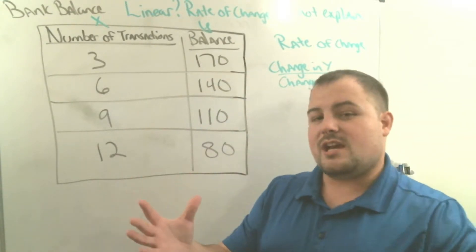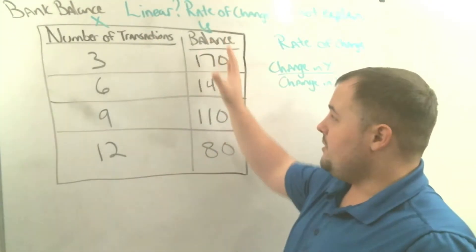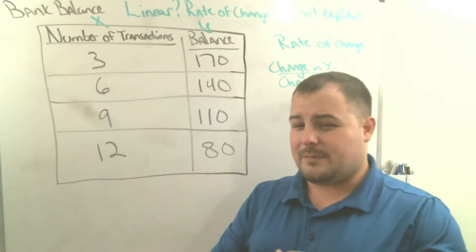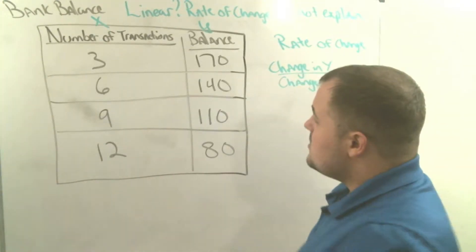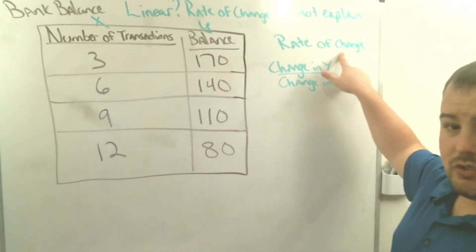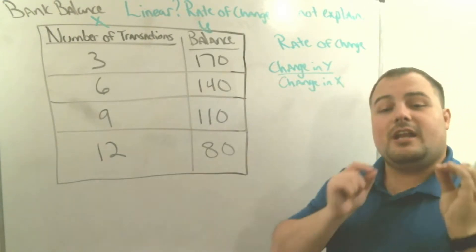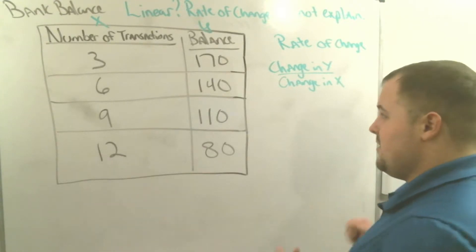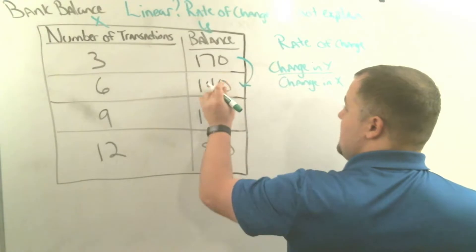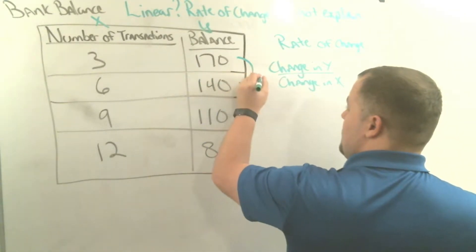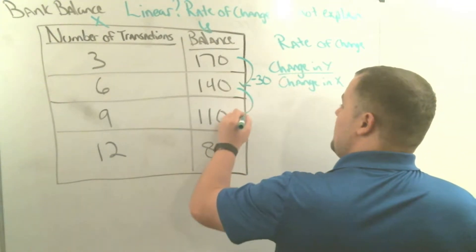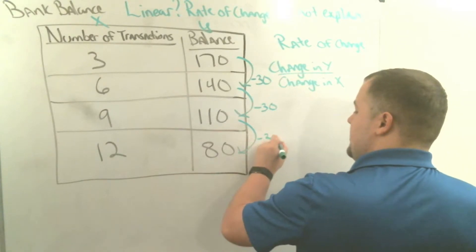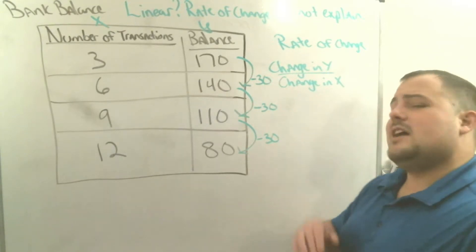If you're ever given a table, first determine which is the x and which is the y. Typically what you see first is the x value and second is the y value. If it deals with time, time is always an x value; quantity is usually a y value. Rate of change is the change in y divided by change in x. If we get the same rate of change every time, that's a straight line. So, going from 170 to 140 is subtracting 30; from 140 to 110 is subtracting 30; from 110 to 80 is subtracting 30. The change in y is going down by 30.